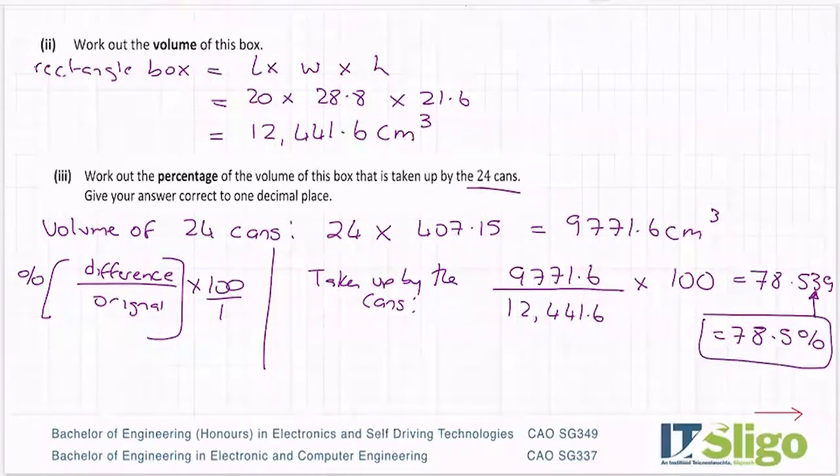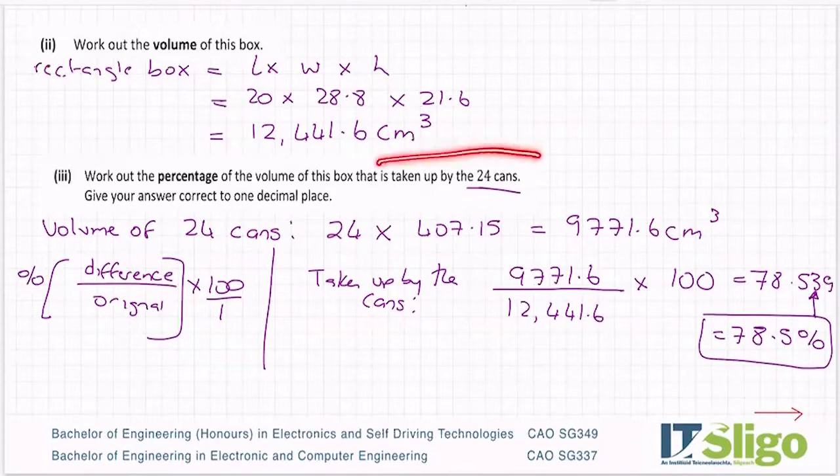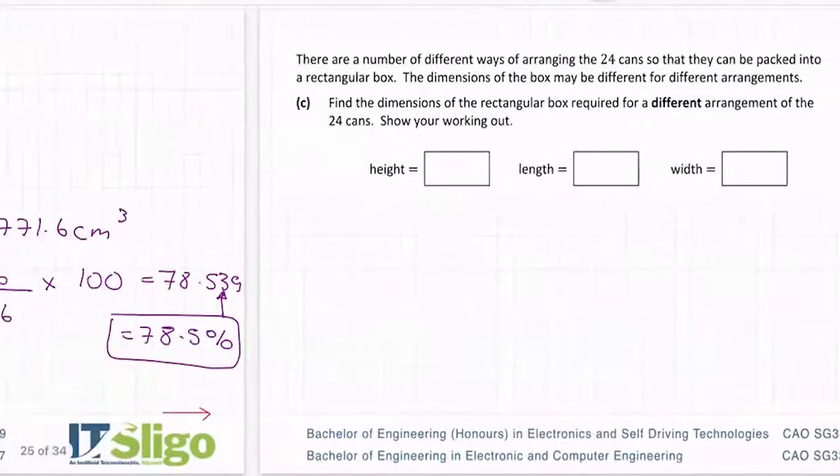Let me just check that I put that into the calculator correctly. 9,771.6 divided by 12,441.6 equals, multiply by 100. 78.5%. So that is the percentage of the volume of the box that's taken up by the cans. If it asked me for the percentage space or wasted space, you would have to subtract one from the other and then put it over the original as well. But it was taken up by the cans.